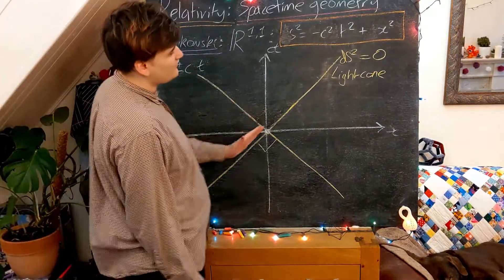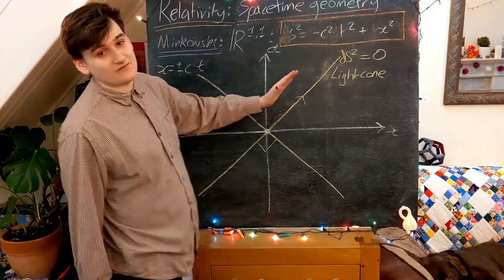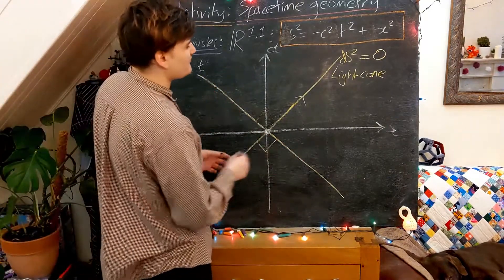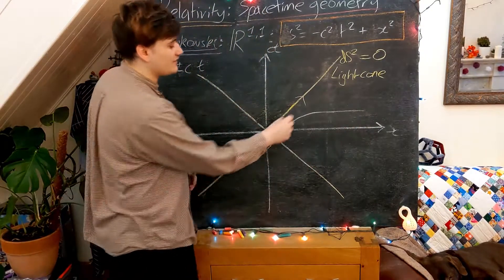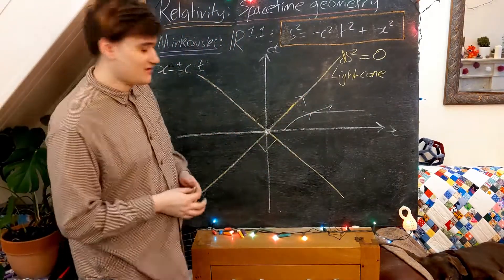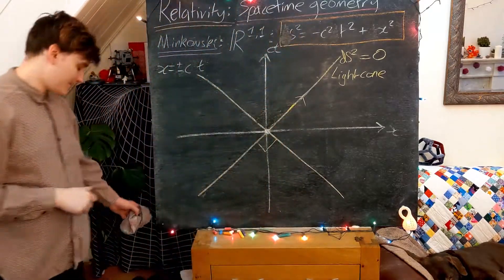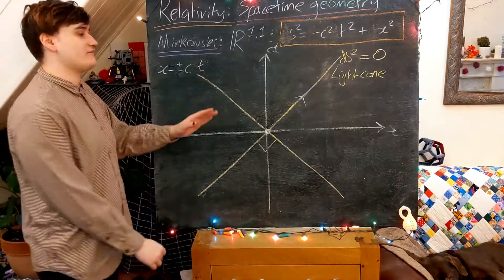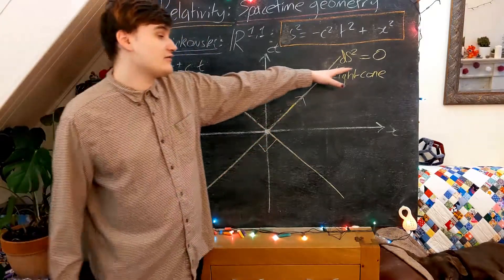Once we start talking about c as the speed of light, we'll see that these lines represent the world line that light follows through Minkowski space. Light travels along the light cone, which represents the maximum possible speed at which you can travel through Minkowski space. The gradient of a world line represents your speed, and if your gradient exceeds that of the light cone, you're travelling faster than the speed of light. Mathematically, these lines simply represent all the points in Minkowski space which have zero distance from the origin.